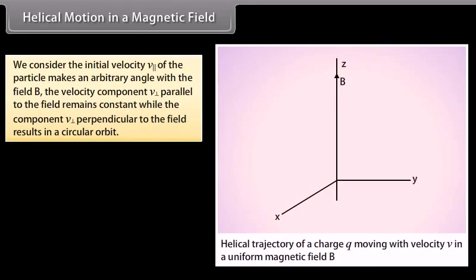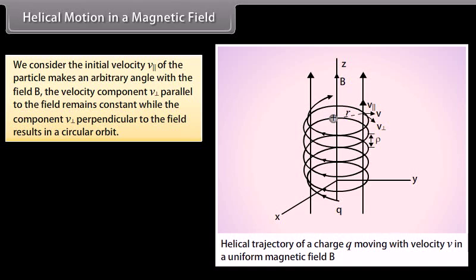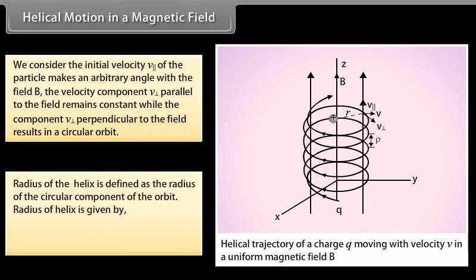Helical Motion in a Magnetic Field: When the initial velocity V of a particle makes an arbitrary angle with the field B, the velocity component parallel to the field remains constant while the component perpendicular to the field results in a circular orbit. The radius of the helix is defined as the radius of the circular component of the orbit, and is given by r = mv⊥ / QB, where v⊥ is the perpendicular component of velocity.